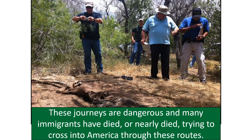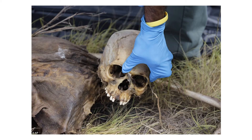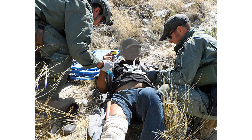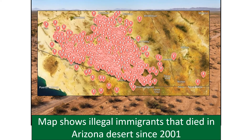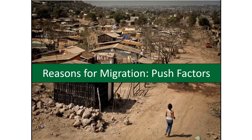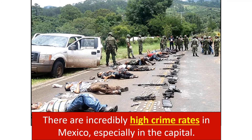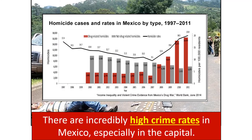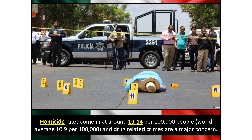These journeys are dangerous and many immigrants have died or nearly died trying to cross into America. This map shows illegal immigrants who died in the Arizona desert since 2001. Reasons for migration — push factors. There are incredibly high crime rates in Mexico and other parts of Latin America. Homicide rates run around 10 to 14 per 100,000 people, and drug-related crimes are a major concern. Some parts of Mexico have become so dangerous that the US State Department advises Americans not to travel there.